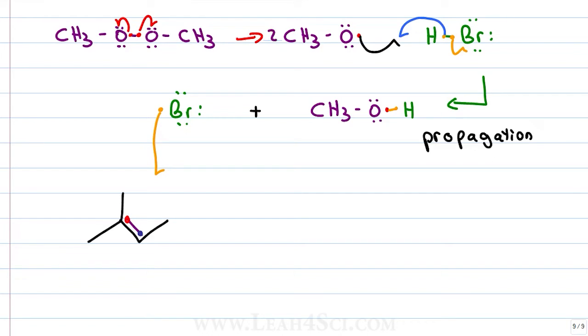When bromine attacks, it's looking to form a bond between itself and carbon and one of the pi electrons will come up to meet it so that they can form a bond where the second electron will break onto the molecule to sit as a lone electron on one of the carbon atoms. Question is, which one?